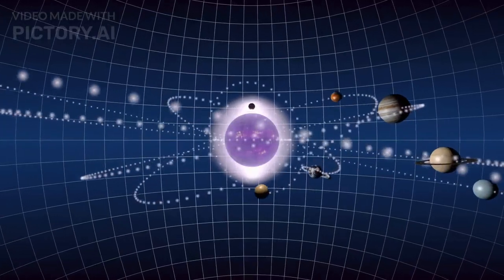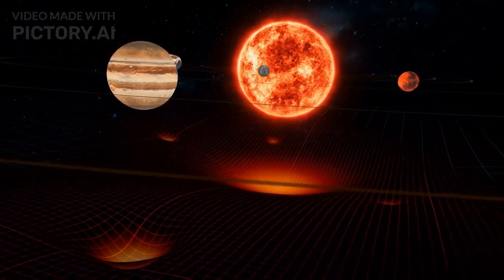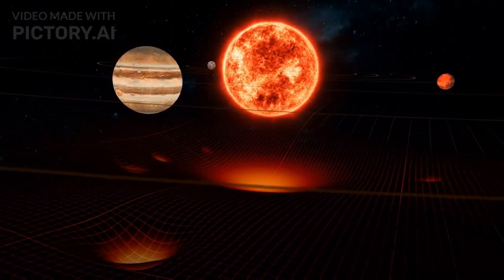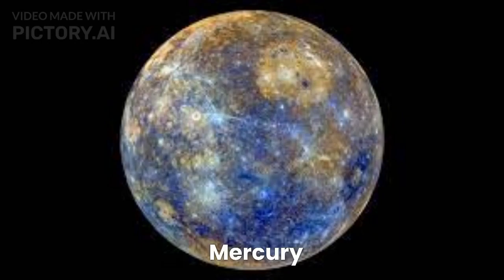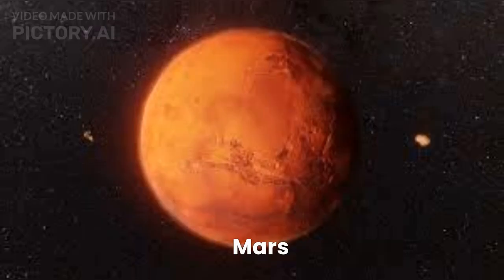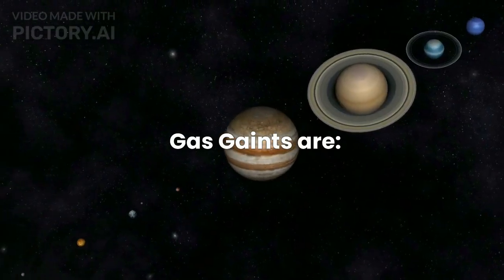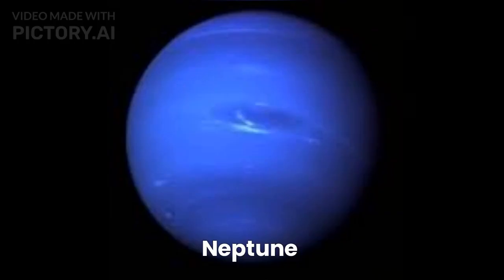The planets, diversity in orbit. There are 8 recognized planets in our solar system, divided into two categories as terrestrial planets and gas giants. The terrestrial planets are Mercury, Venus, Earth, and Mars. And the gas giants are Jupiter, Saturn, Uranus, and Neptune.